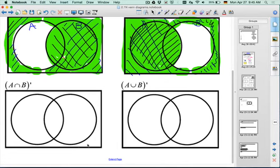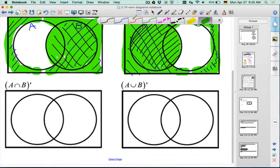So A intersection with B, we figured out above that was the middle bit, the overlap, and we want the complement of that.